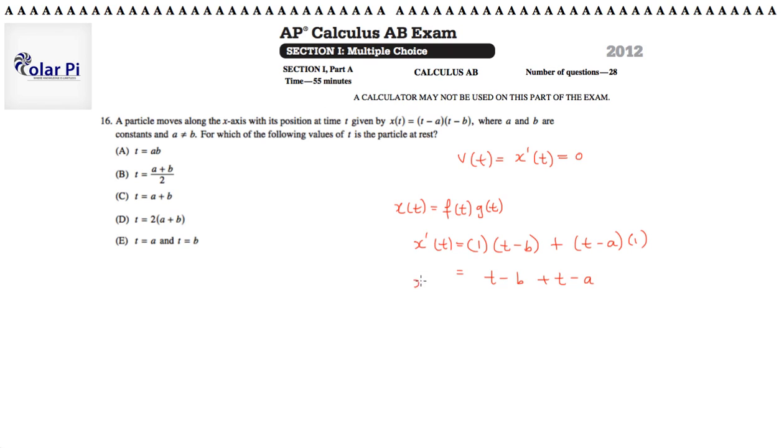And since this is x prime of t, which is v of t, and this is what we want to equal zero, we set it equal to zero, and solve to find that 2t will have to equal a plus b. Therefore, t, which is where the particle is at rest, is a plus b divided by two.